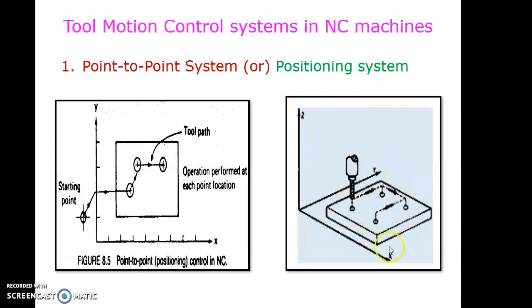As an example, suppose I need to drill four holes on a rectangular plate — first, second, third, and fourth holes. We first drill a hole at a particular location, retract the tool, move it to another location, perform the drilling operation again, retract the tool, and drill at the third position, and so on.